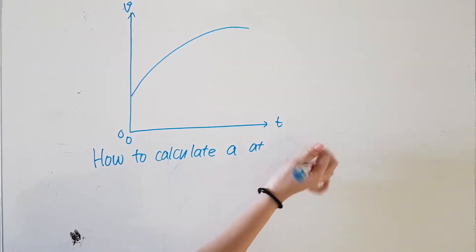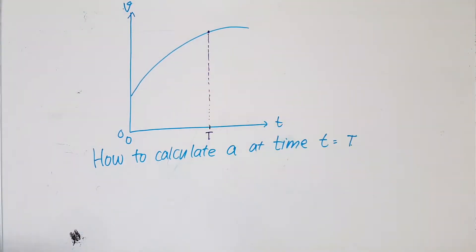In this particular example, we can calculate acceleration at time t by drawing a tangent to the curve.